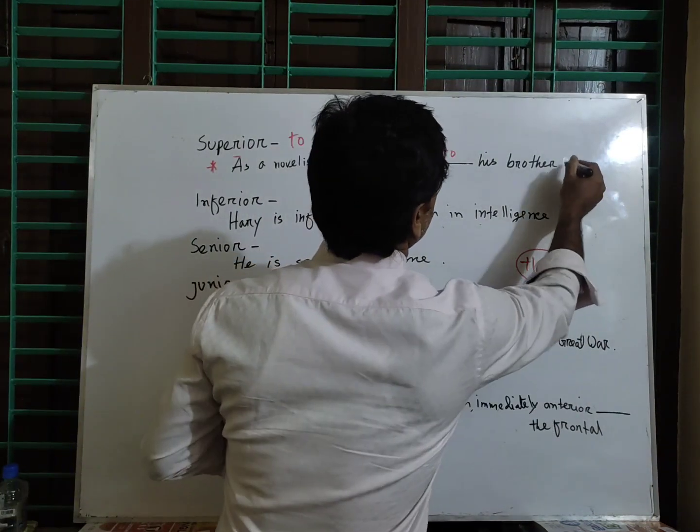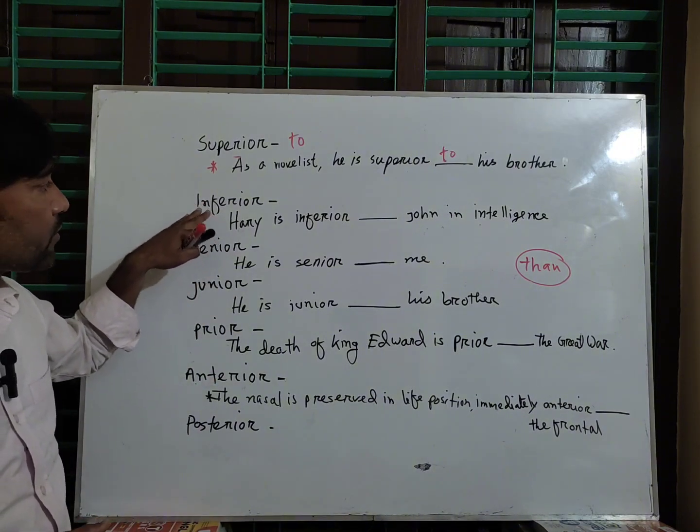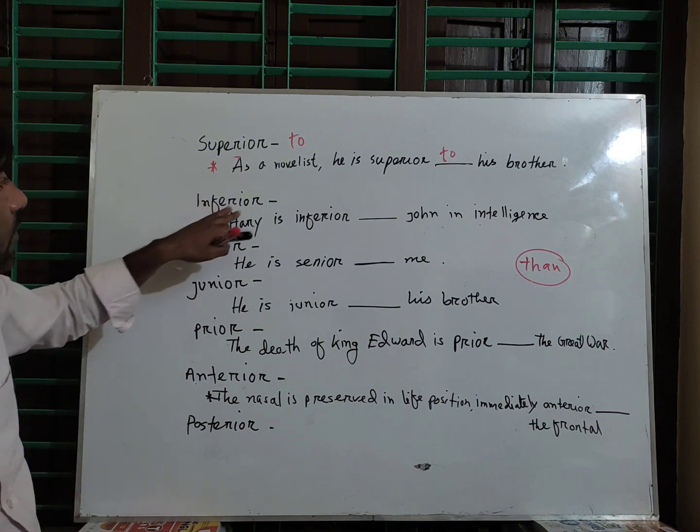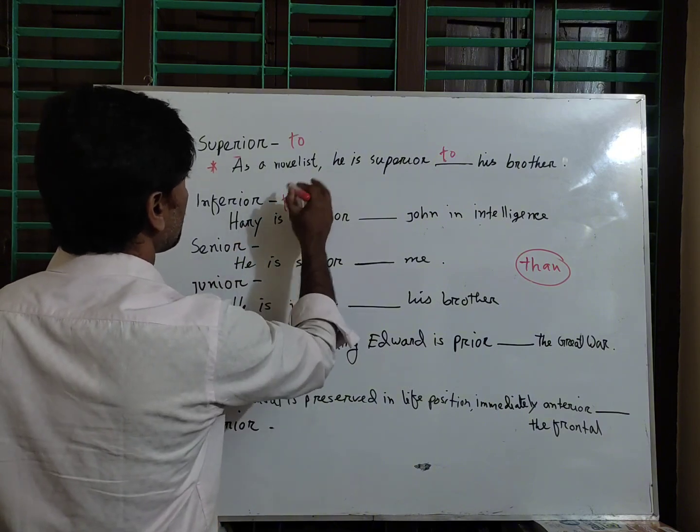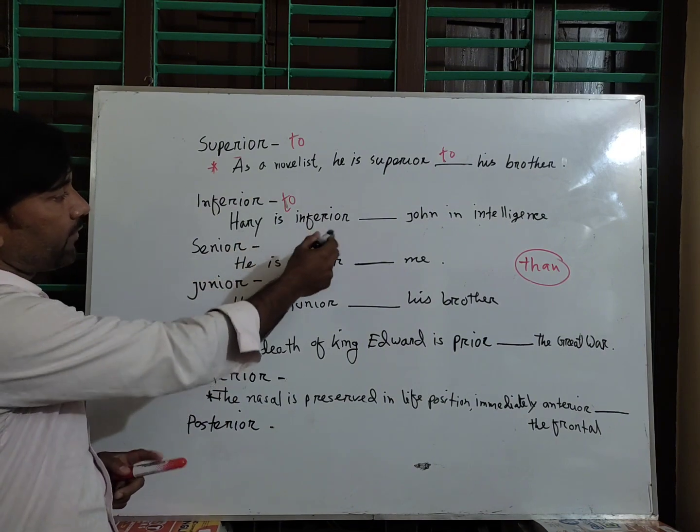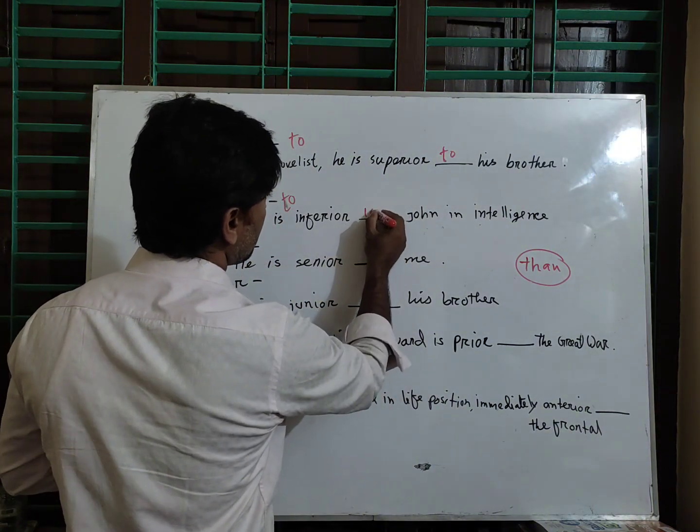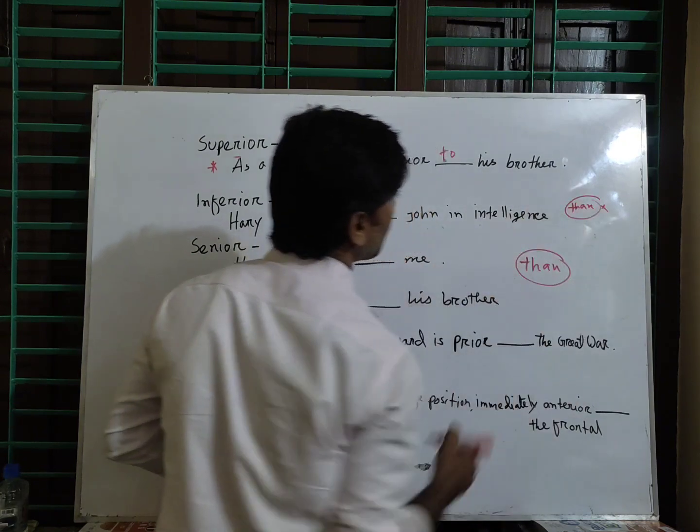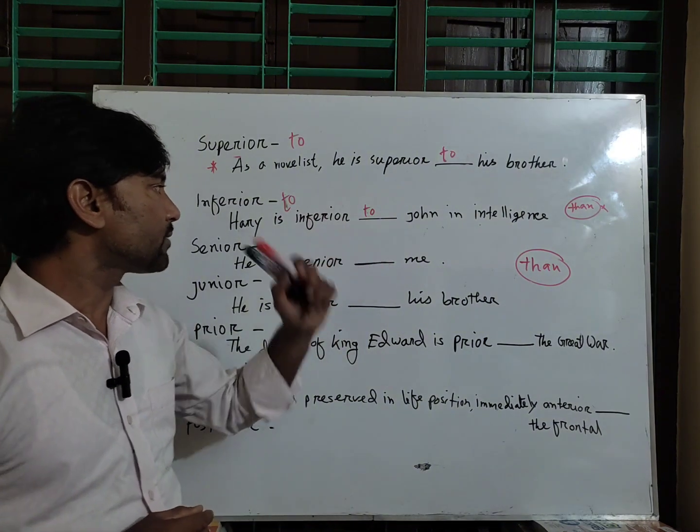Next, inferior. Inferior is also a Latin comparative, so we should put 'to', not 'than', after the adjective. For example: Harry is inferior to John in intelligence, not 'than'. This is not correct English; this is incorrect English if we put 'than' after inferior.